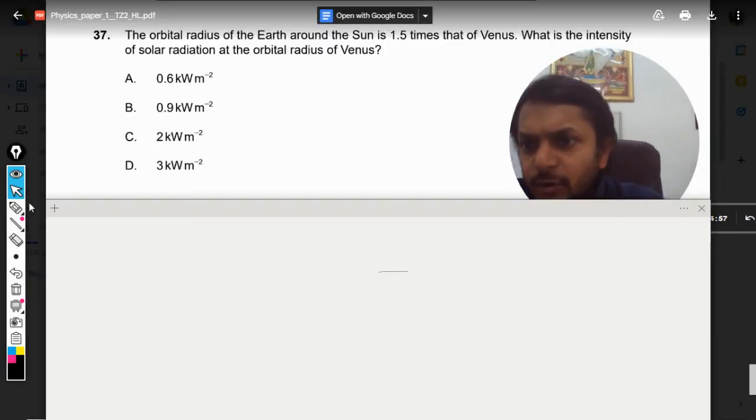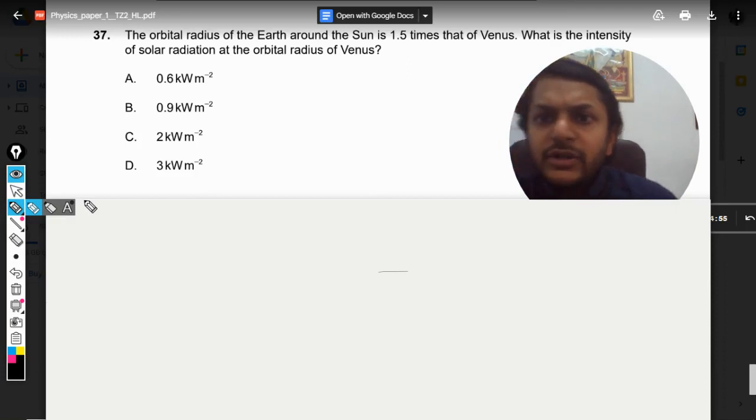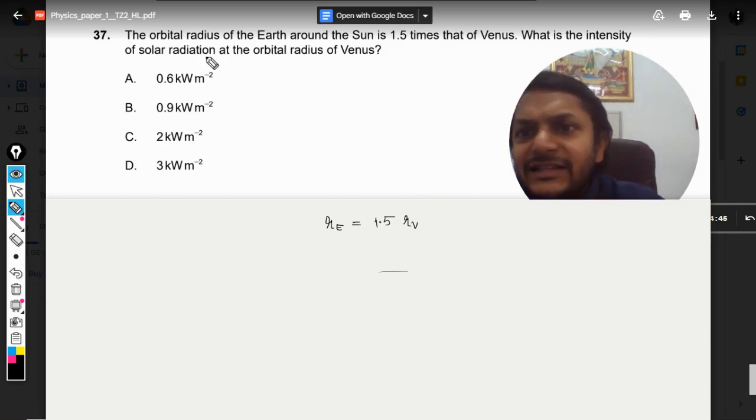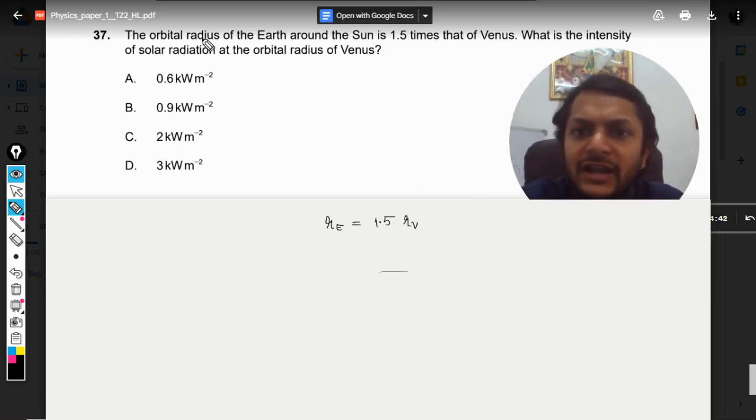Okay, dear students. Let us see what is in this question. The orbital radius of Earth is 1.5 times that of Venus, so r_e = 1.5 × r_v. What is the intensity of solar radiation at the orbital radius of Venus? So we want to find intensity.